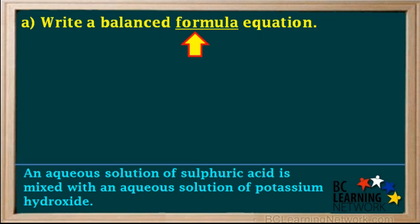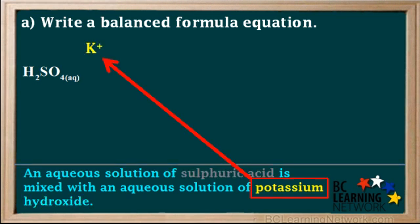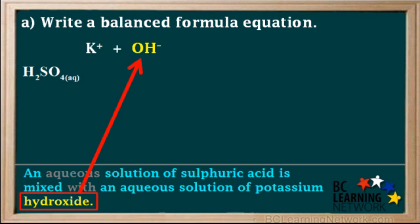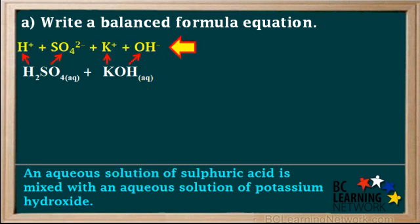We'll start with the formula equation. The formula for sulfuric acid is H2SO4 and it's aqueous, so we add the subscript AQ. The other reactant is potassium hydroxide, which is made up of potassium or K plus ions and hydroxide or OH minus ions. K plus OH minus ions can be combined to give the formula KOH, and we're told that potassium hydroxide is aqueous, so we write AQ here.